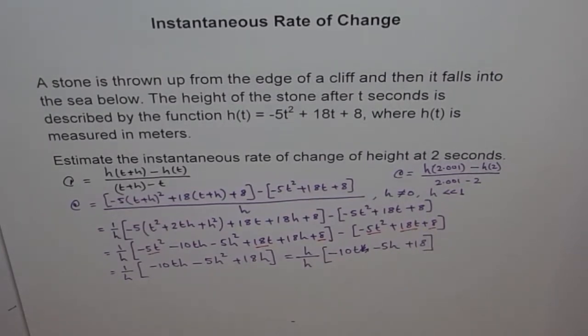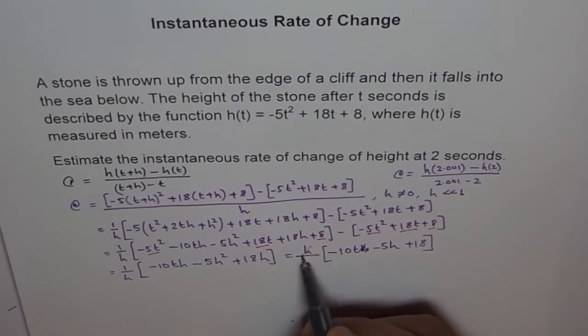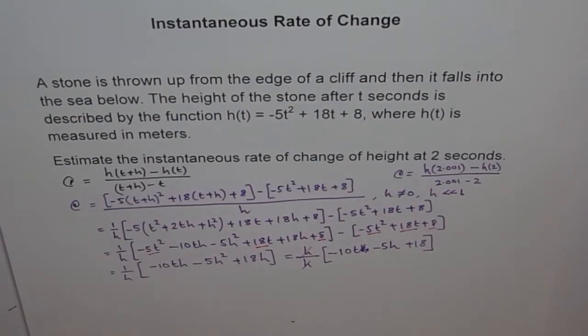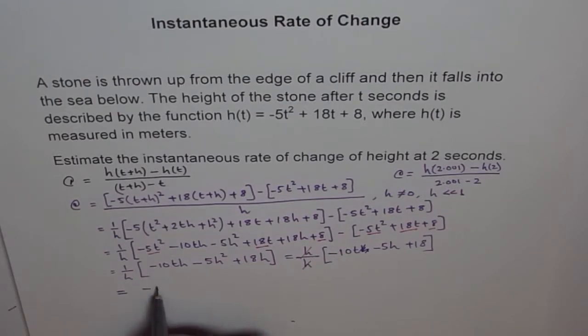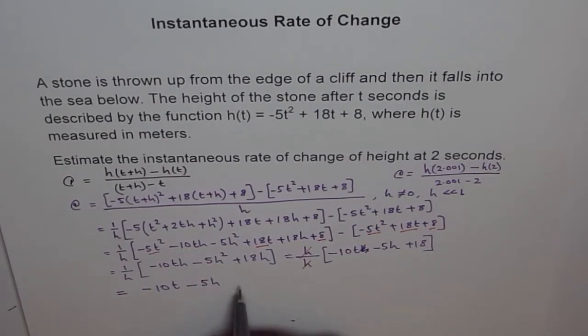This is what we get. And now, h and h can be cancelled out. Is that okay? Now, what are you left with? You are left with -10t - 5h + 18. So, this is equals to -10t, not 18, -10t - 5h + 18.